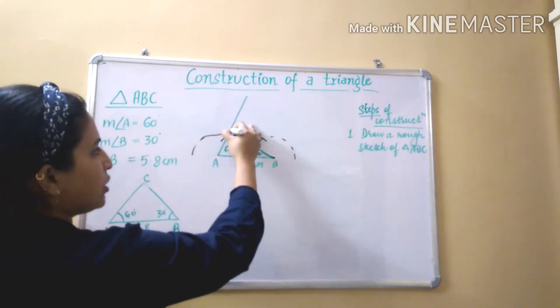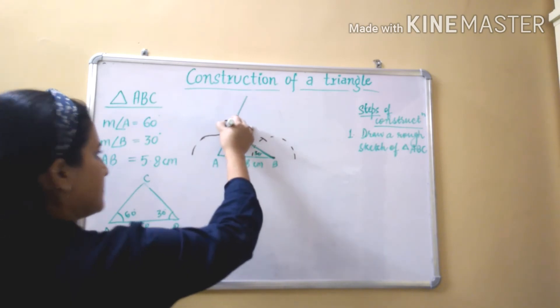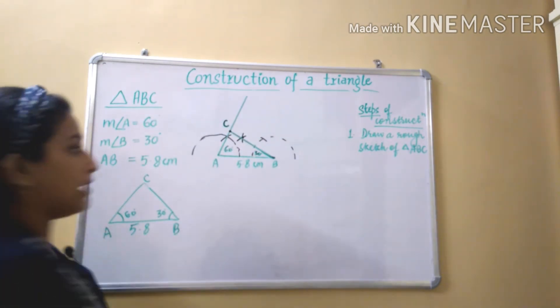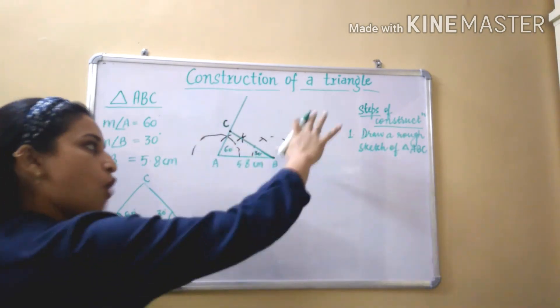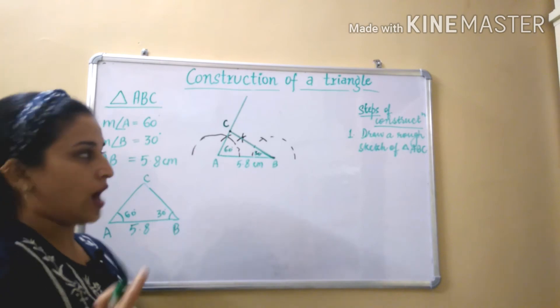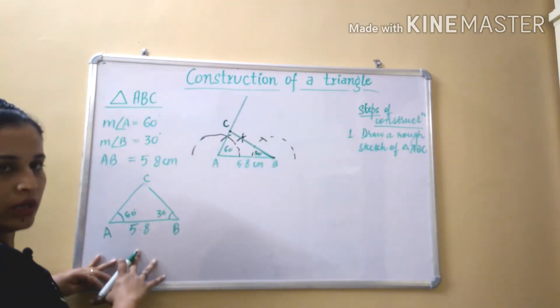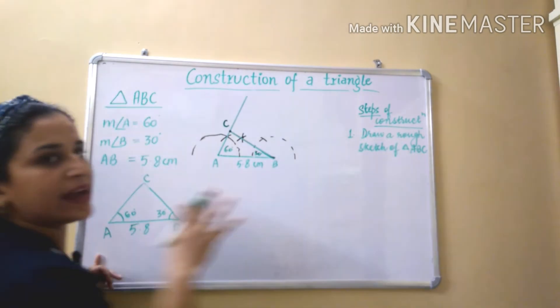So the point we got, it is point C. Okay, dear kids, I have constructed first of all for you. Now we are going to start our writing construction steps one by one. Firstly we have drawn rough sketch. So what I have written: draw a rough sketch of triangle ABC.